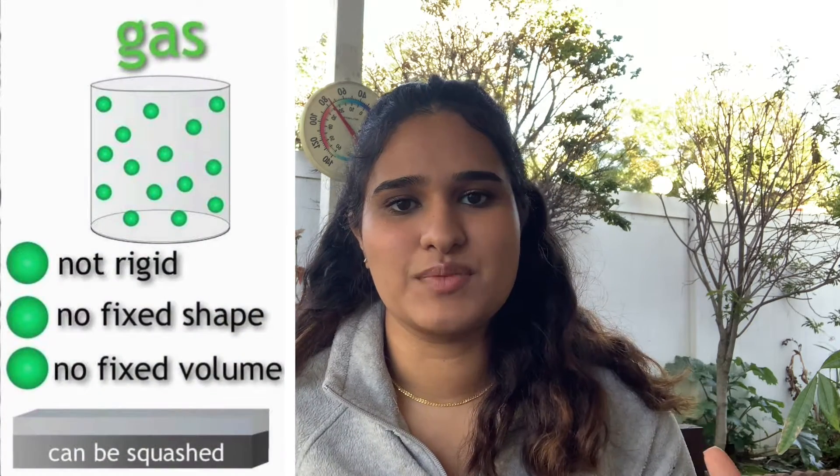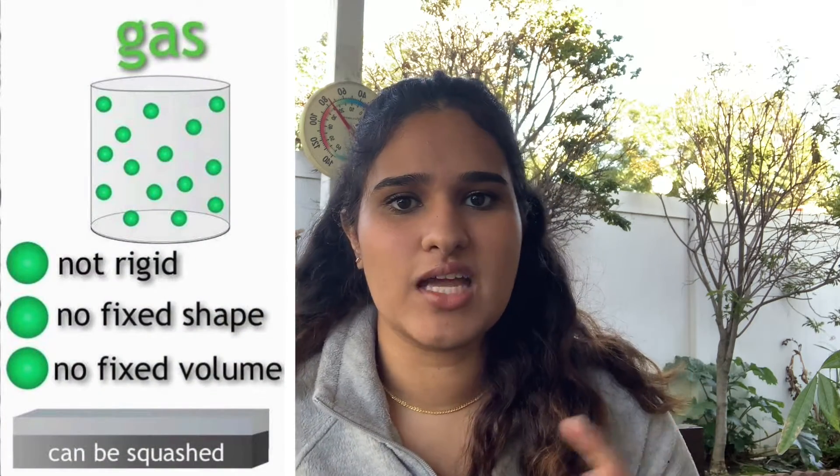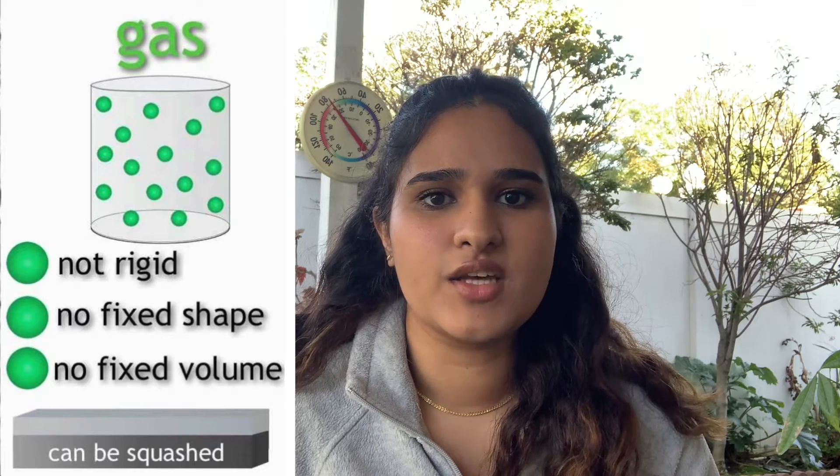The last one is a gas. This is harder because you can't really see gas that often, but gases are very loosely spread molecules that are able to move around very quickly. For example, when you are boiling a pot of water and you see the steam coming up — that is water vapor, that is a gas.